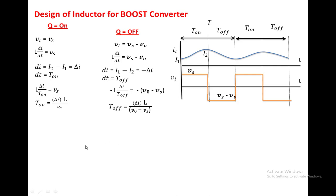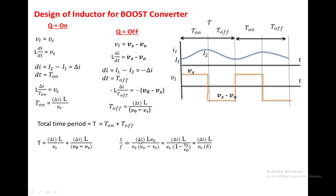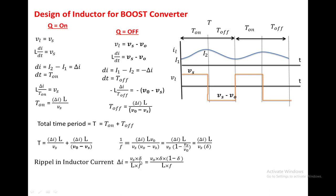We know that the total time period T equals T_on plus T_off. Substituting the above two values and simplifying: delta_i into L divided by Vs, plus delta_i into L divided by (V0 minus Vs). Taking delta_i into L as common, we get delta_i into L times V0 divided by (Vs into (V0 minus Vs)). Since in a boost converter (1 minus Vs/V0) equals delta, this simplifies to T equal to delta_i into L divided by (Vs into delta). Writing T as 1/F, the ripple inductor current delta_i equals Vs into delta divided by (L into F). This is the expression for ripple inductor current in terms of input voltage.